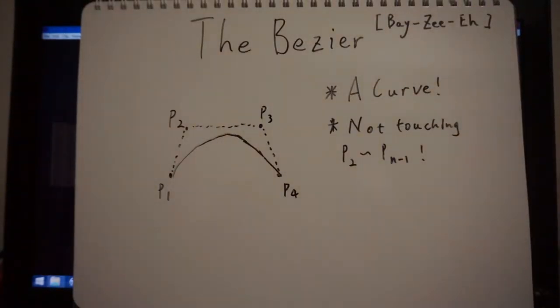Up next, we have the Bezier curve, which is short for we're going to linearly interpolate the line linearly interpolated from all the linear interpolations, recursively. I am serious.